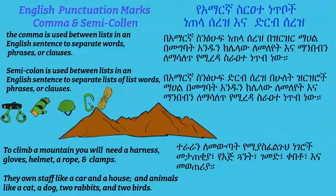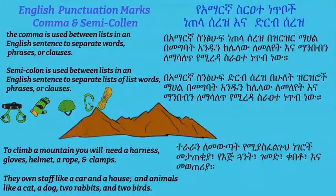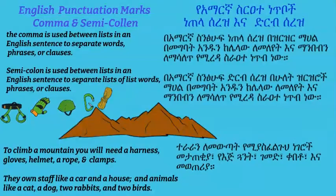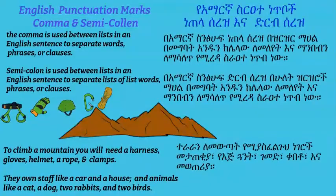For example, to climb the mountain we need: gloves, helmets, rope, harness, and a clip — so we use a comma to separate between the words to show there is a list. In the second example: they own stuff like a car and a house; and animals like cats, dogs, two rabbits, and two birds. Here we use comma and semicolon — the semicolon to separate the first list from the second list.